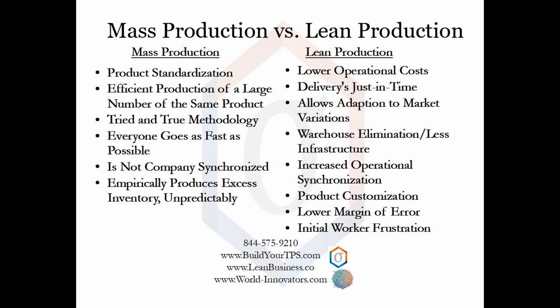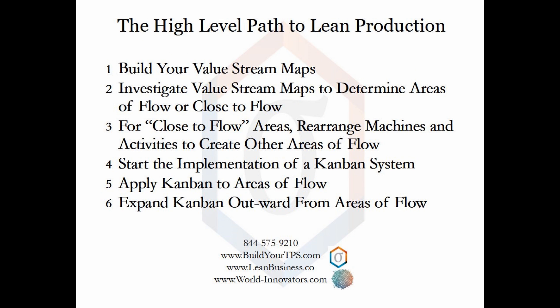This new capability comes with challenges. Workers will have to change how they operate and the whole manufacturing plant becomes synchronized. A lean production system is less able to accommodate some errors. Let's first do a high-level overview of the six steps to lean production before I go into more detail. This is the Toyota production system's high-level plan to lean production.